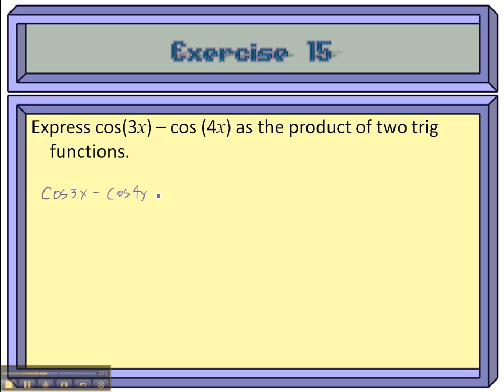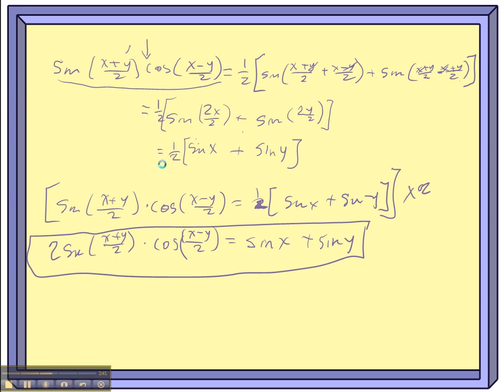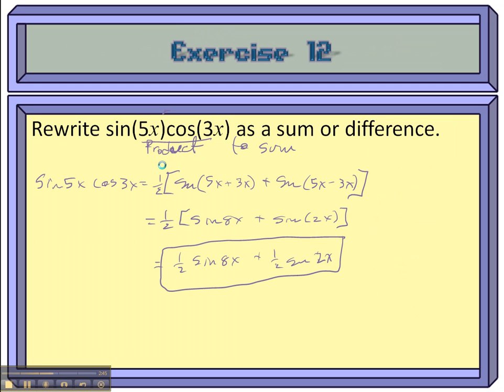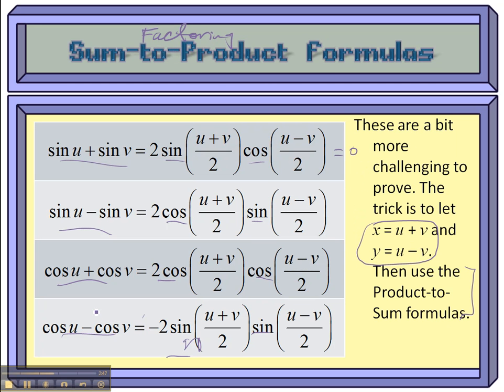So cosine 3x minus cosine of 4x. Now let me just backtrack just a bit, go back to the formula, because this one's kind of weird. Cosines, whenever we're taking the difference or the sum of the cosines, it's either going to be the product of all cosines or the product of all sines. For the cosines, it is negative 2 times the sine of average of them times the sine of the difference divided by 2.